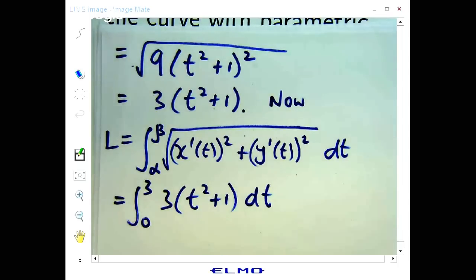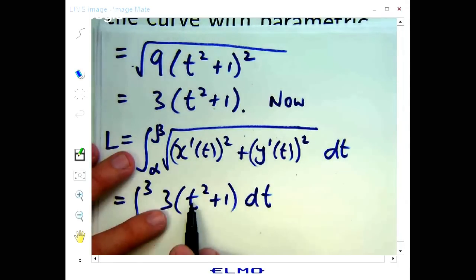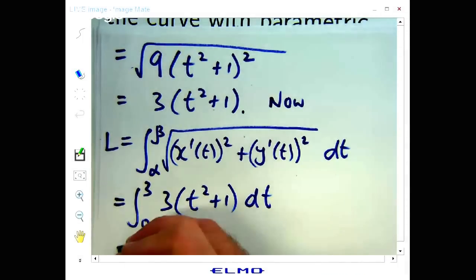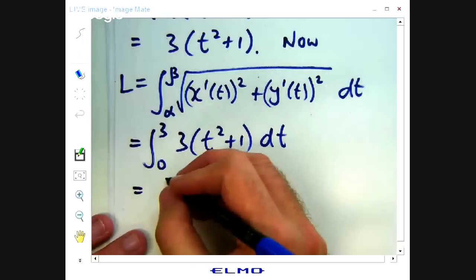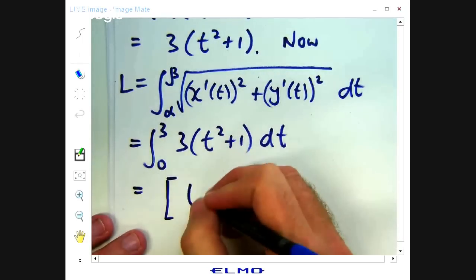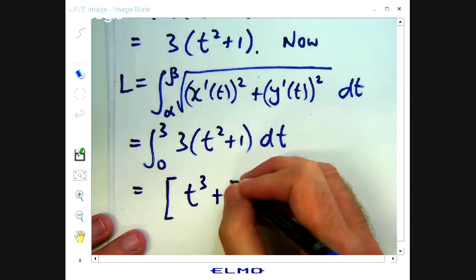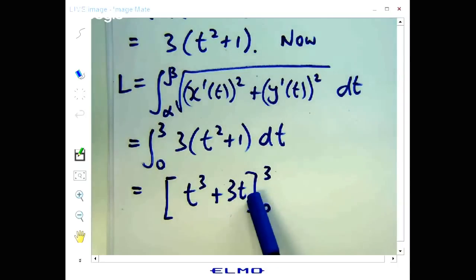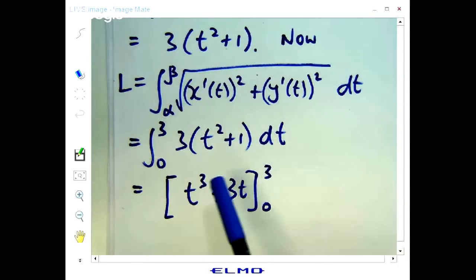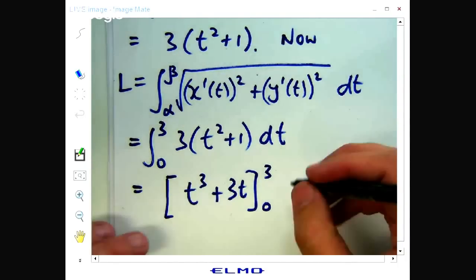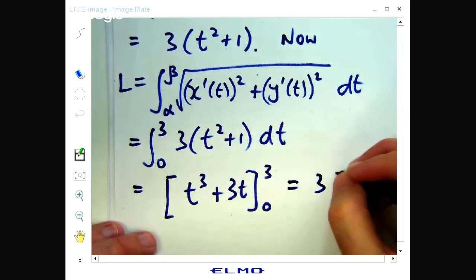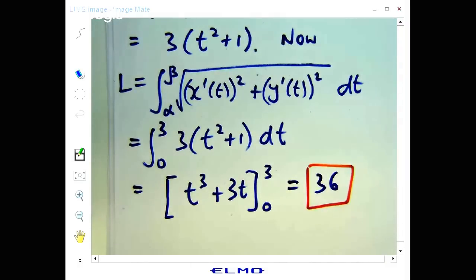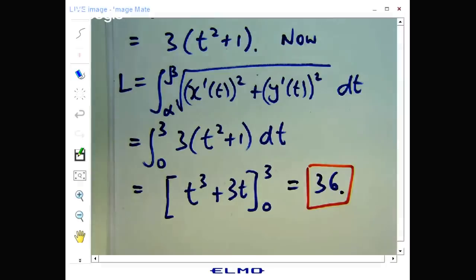And now I'm just integrating a polynomial. So if I integrate 3T squared, I get T cubed. If I integrate 3, I get 3T. So if I do the integration, I'll get this and when I plug in 0, of course I get 0. When I plug in 3, I'll get 27 plus 9, which is 36. So the length of the curve that we're interested in is 36 units.